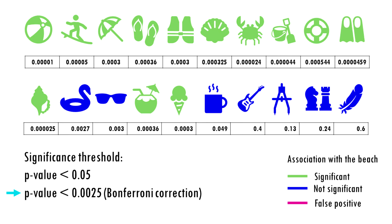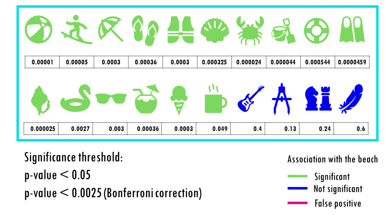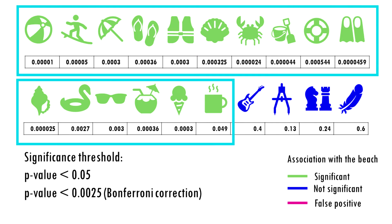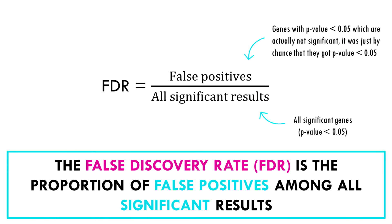Is there another way of solving the problem of multiple testing? Of course there is! The Bonferroni correction lowers the p-value for all objects. But what if we could control what happens to significant objects only? The false discovery rate, or FDR, is the proportion of false positives among all significant results.